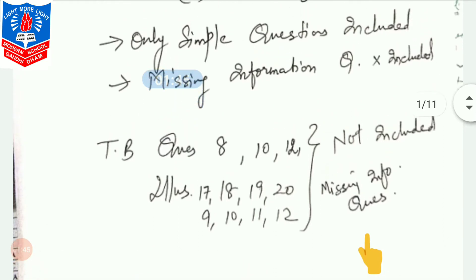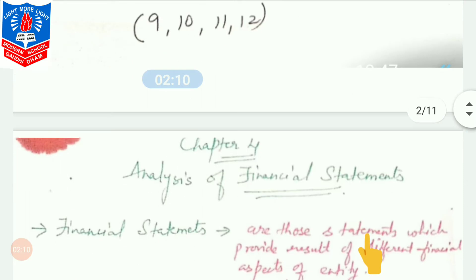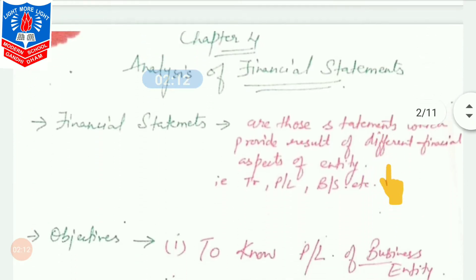You can note down: missing information questions — textbook question numbers 8, 10, and 12 are not included. Even illustrations 17, 18, 19, 20, and also 9, 10, 11, 12 — comparative and common size missing information questions and illustrations mentioned are not included in the current year's syllabus. Let us start with the chapter.